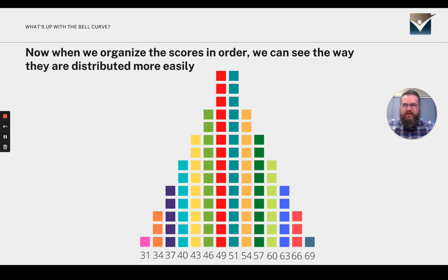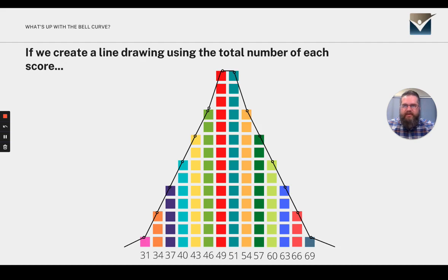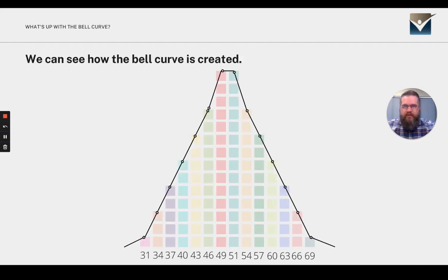It's not hard to see how this organization makes a jump to what we start to see like a bell curve shape emerging. If we created a line drawing using the total number of each score, you can see how that bell curve is created.